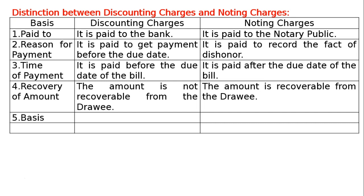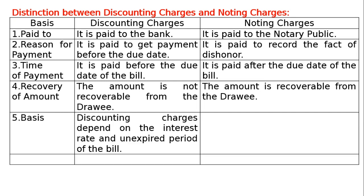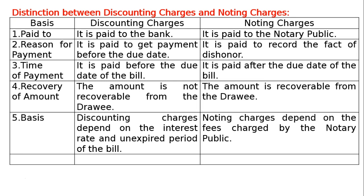The fifth basis is the basis of calculation. In case of discounting charges, discounting charges depend on the interest rate and unexpired period of the bill. In case of noting charges, they depend on the fees charged by the notary public.